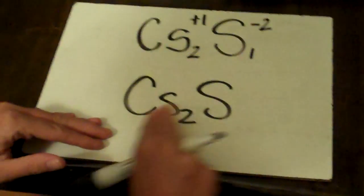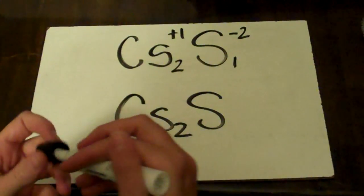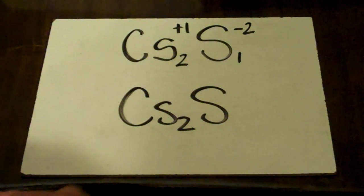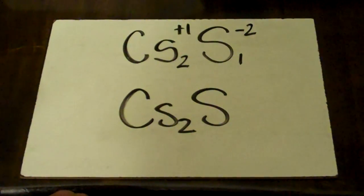And this is cesium sulfide. Cesium sulfide. So just the element with sulfur, the IDE after it. And that is how you name this basic binary ionics.